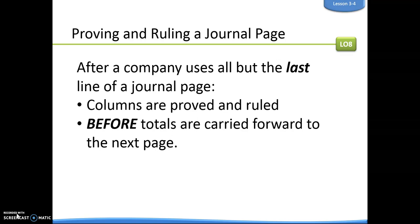So back to proving and ruling. When we get to the last line of your journal page, you don't want to fill your last line with a transaction — you want to leave that blank because we prove and rule our columns. We always do this before totals are carried forward to the next page. If we have an error, we don't want to carry that forward. So when you get to the end of a journal page, we always prove — meaning we check to make sure that our debits equal our credits.